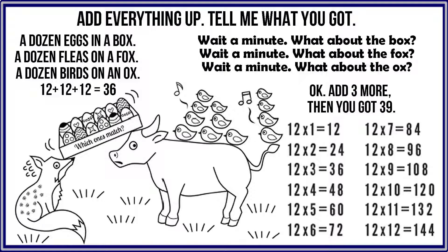Add everything up, tell me what you got: a dozen eggs in a box, a dozen fleas on a fox, a dozen birds on an ox. 12 plus 12 plus 12 is 36. Wait a minute — what about the box? Wait a minute — what about the fox? Wait a minute — what about the ox? Okay, add 3 more, then you got 39.